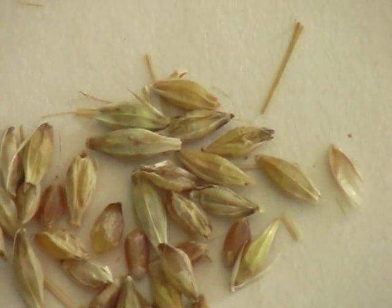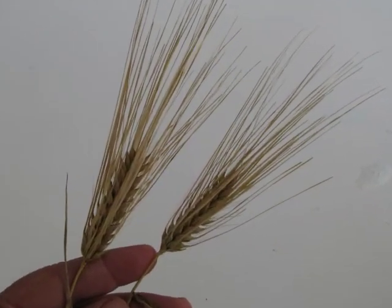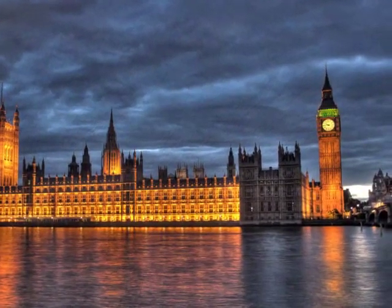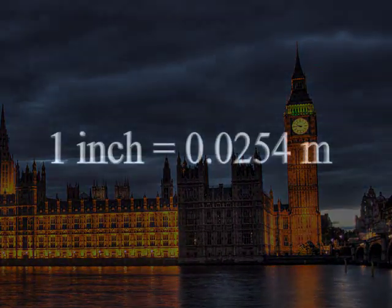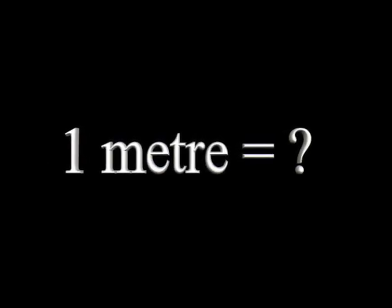Despite these problems, the barleycorn continued to play a role as the base unit of the British measuring system for centuries. Confusion about the inch continued until 1959, when the international community officially defined the inch as 0.0254 of a meter. Which, of course, creates another problem. How do we define a meter?